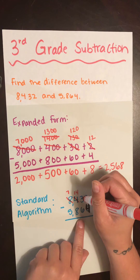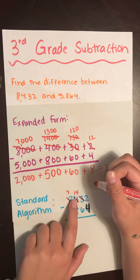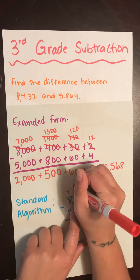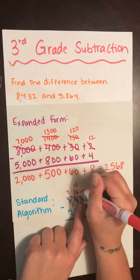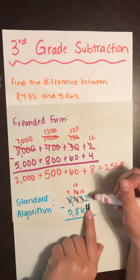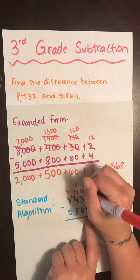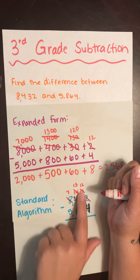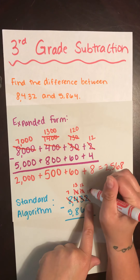Then I come to my tens. 3 is smaller than 6, so I need to regroup again because I can't take 6 from 3. I cross it out, go to its neighbor, and take 100 from here — that will make the hundreds a 13. And that will make my 3 a 13 as well because 10 plus 3 is 13. Then I come to my ones. I cannot take 4 from 2, so I need to regroup again. I cross off the 2, come to my neighbor, and take 10 — that makes the tens a 12, which is really 12 tens or 120. And I add 10 to my ones, which makes that also a 12.